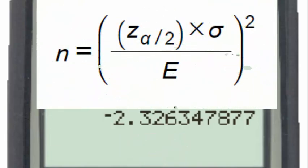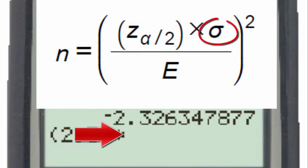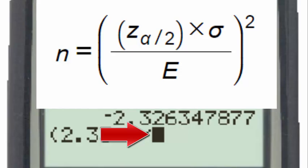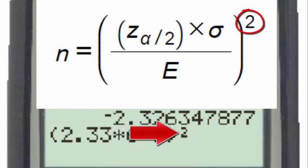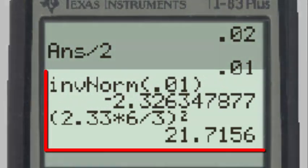And using the TI-83, we'll start with a parentheses. Then we'll input 2.33. We'll multiply that by the sigma of 6 and divide by the margin of error, which is 3, close the parentheses, and raise it to the 2nd power. And we see the number of students necessary to sample is 22, rounding our answer off to the nearest integer.